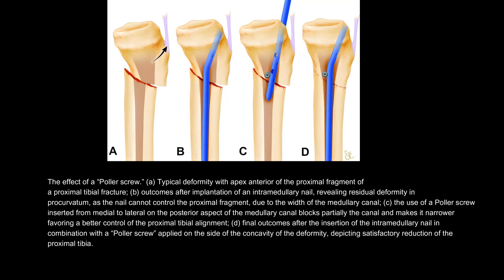The effect of a blocking screw: (a) a typical deformity with apex anterior of the proximal fragment; (b) outcomes after implantation of an intramedullary nail, revealing residual deformity in procurvatum, as the nail cannot control the proximal fragment due to the width of the medullary canal; (c) use of a blocking screw inserted from medial to lateral on the posterior aspect of the medullary canal, partially narrowing it and favoring better control of proximal tibial alignment; (d) final outcomes after insertion of the intramedullary nail combined with a blocking screw applied on the side of the concavity of the deformity, depicting satisfactory reduction of the proximal tibia.